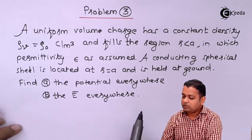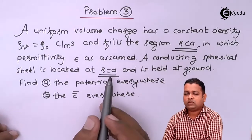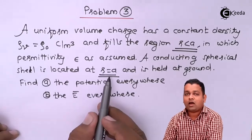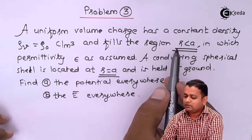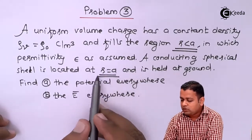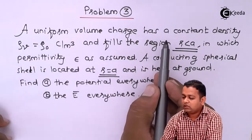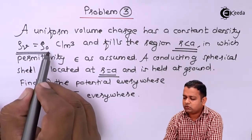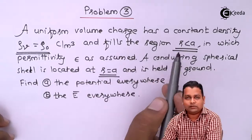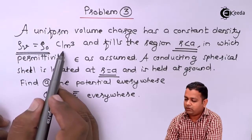After reading this problem statement, the attention goes to the condition R less than A and R equal to A. R is encountered in the spherical coordinate system as the radius of the spherical surface. A spherical shell is given at R equal to A. So R less than A is inside the spherical shell, R greater than A is outside, and R equal to A means we are on the spherical surface. Inside, we have rho_V equal to rho_0 Coulombs per meter cube, with permittivity epsilon.